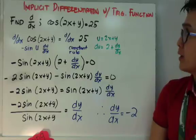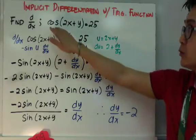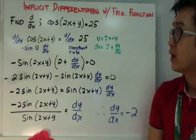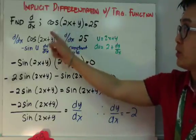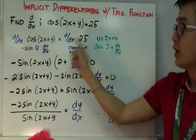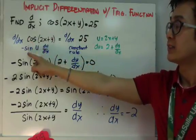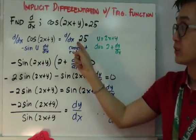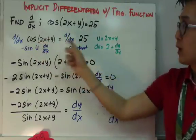Let's start with implicit differentiation with a trig function. Our function is cosine(2x+y)=25, and we're asked to find the derivative. To separate the terms: cosine(2x+y) and 25. The derivative of cosine(2x+y) is negative sine(u) du/dx, and the derivative of 25 is just a constant, so it's going to change to zero.